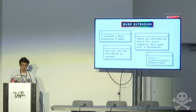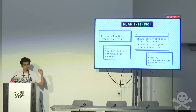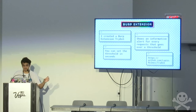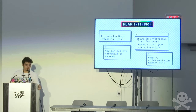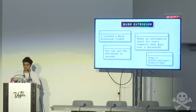I also created a Burp extension called Tridos that I'm releasing right after this talk. It passively searches your proxy for all requests taking more than X seconds, where X is a threshold you set yourself. I personally set it to three seconds. This is a good way to identify queries that take a lot of time on the backend and that you can use for exploitation.